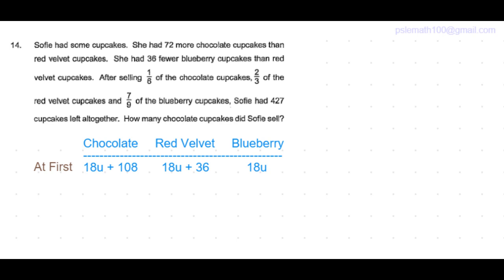So the number of chocolate cupcakes is 18 units plus 108. Red velvet is 18 units plus 36, and blueberry is 18 units.